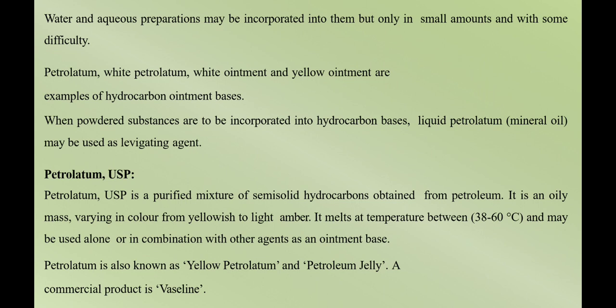Petrolatum USP is a purified mixture of semi-solid hydrocarbons obtained from petroleum. It is an oily mass and the color varies from yellowish to light amber. It may be used alone or in combination with other agents as an ointment base. Petrolatum is also known as yellow petroleum jelly, and the commercial product Vaseline is also an example.